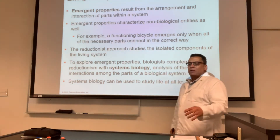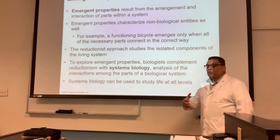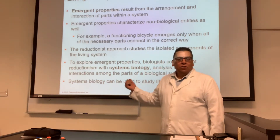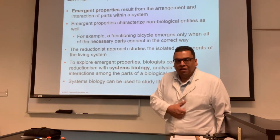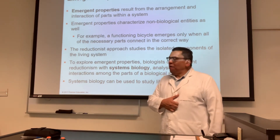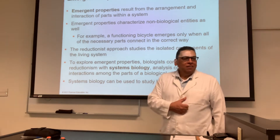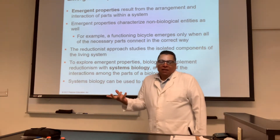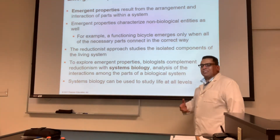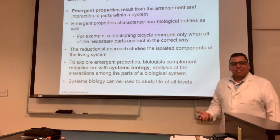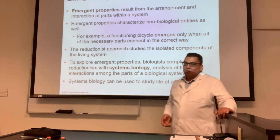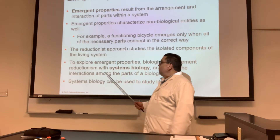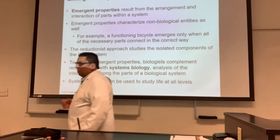Sometimes we have to use a living organism in our research. For example, in the blood pressure experiment — I couldn't use a dead rat for that, because the blood pressure of a dead rat is zero. I have to use a living rat, and that's called systems biology. The approach you take depends on the research question you're asking. In my research, sometimes I used reductionism, sometimes systems biology — it all depends on the research question.